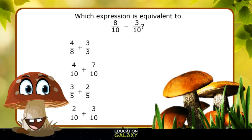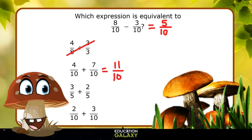Let's check out this problem. Which expression is equivalent to 8 tenths minus 3 tenths? These fractions have common denominators, so I can combine them. 8 minus 3 equals 5, so my answer is 5 tenths. Now, we need to find an answer choice that also has an answer of 5 tenths. The first answer choice doesn't have common denominators, so I can't combine them. The second answer choice has common denominators, but 4 plus 7 equals 11, so that's 11 tenths, not 5 tenths.